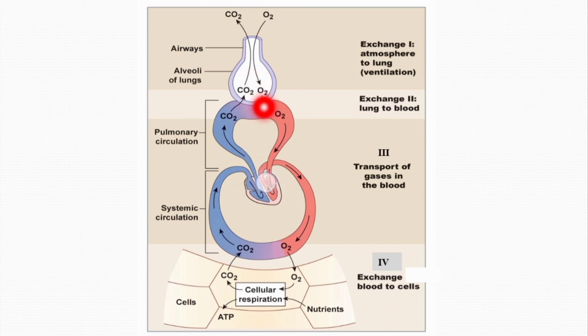The third step is the transport of oxygen and carbon dioxide: oxygen moves from the lungs to the tissues while carbon dioxide moves from the tissues to the lungs. The fourth step is exchange at the level of tissues, where oxygen moves from the blood to the tissues and carbon dioxide moves from the tissues to the blood. Sometimes the term cellular respiration is used — this is basically the use of oxygen in the mitochondria for the production of ATP.